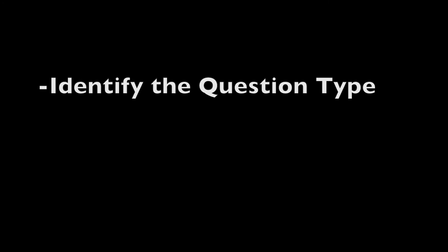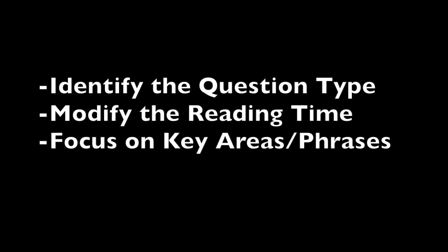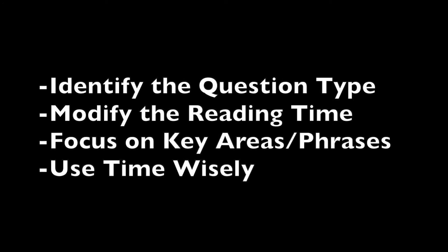To review, the four steps to get a 36 on the ACT Science section: step one, identify the question type; step two, modify your reading to fit; step three, pay attention to key phrases and keywords; step four, use your time wisely. If you're interested in learning more, go check out my course — it outlines everything so you can apply these techniques, get a 36, and achieve your goals. Get out there, get studying, put in the work, and you can get where you need to go.